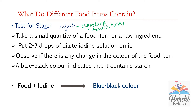Or else, we can test by taking a potato. Potato also contains starch. Take a potato, cut it into 2 pieces, and put 2 to 3 drops of dilute iodine solution on it. It will turn into blue-black color, indicating that potato contains starch. Food plus iodine gives blue-black color. If there is no color change, that means there is no starch in that food item.